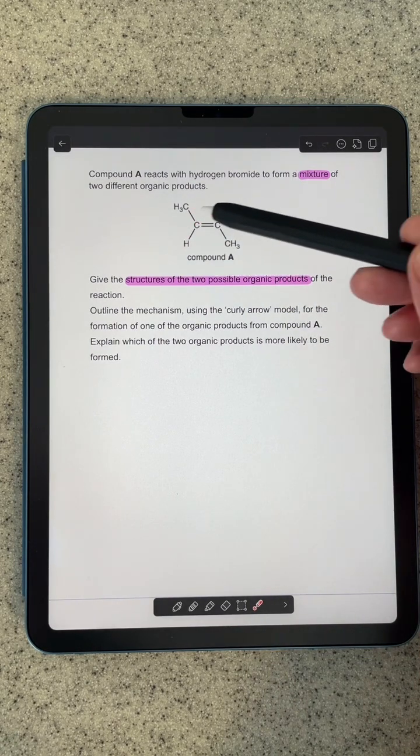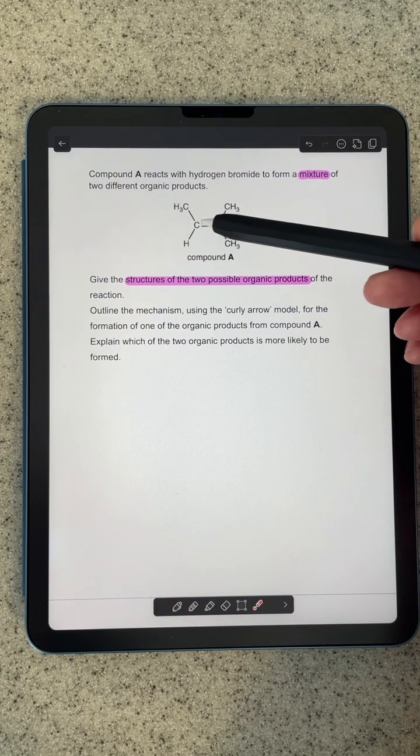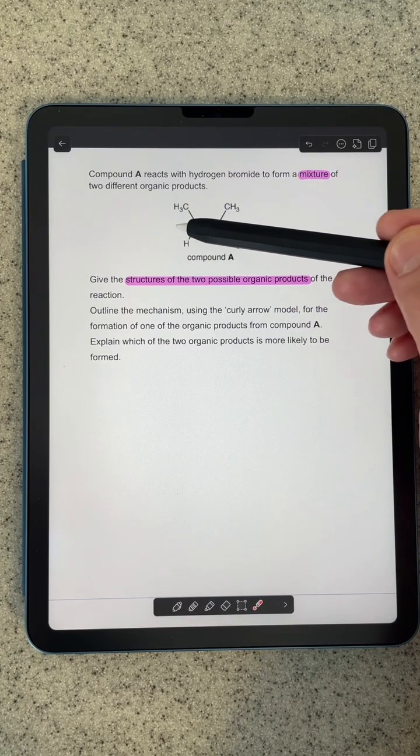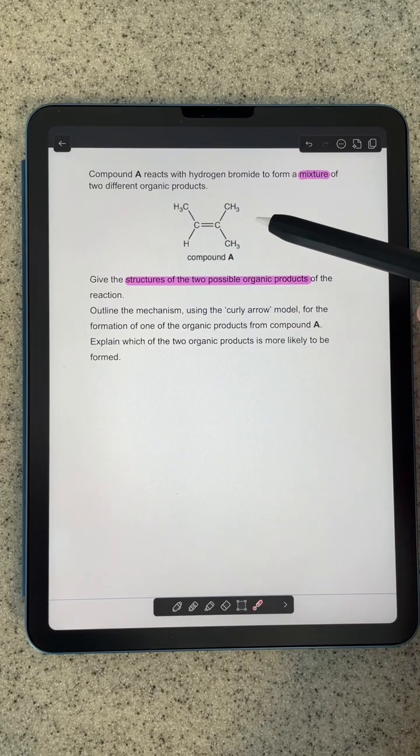So because this is unsymmetrical, then it's different if the hydrogen bonds on the left and the bromine on the right to the other way around.